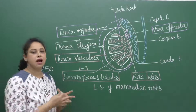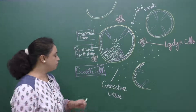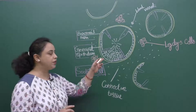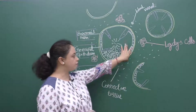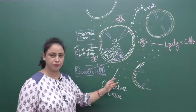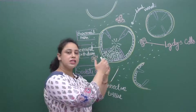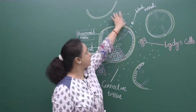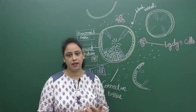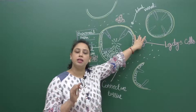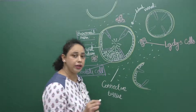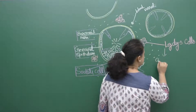Now let's look at the TS of the mammalian testis showing seminiferous tubules. This structure is the seminiferous tubule, with connective tissue present between them. Outside the seminiferous tubules, there is a group of cells visible in pink color — these are called Leydig cells or interstitial cells. They form the endocrine portion of the testis and secrete the testicular hormone androgen.